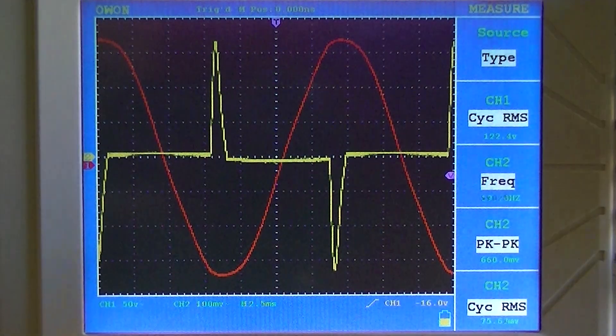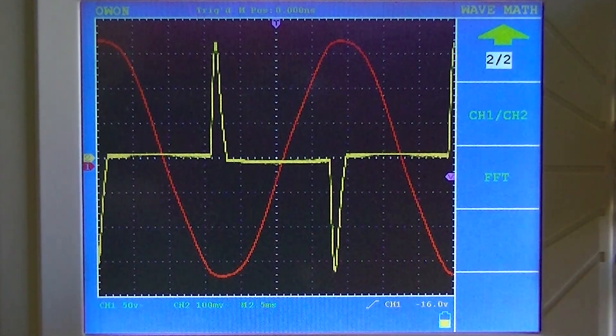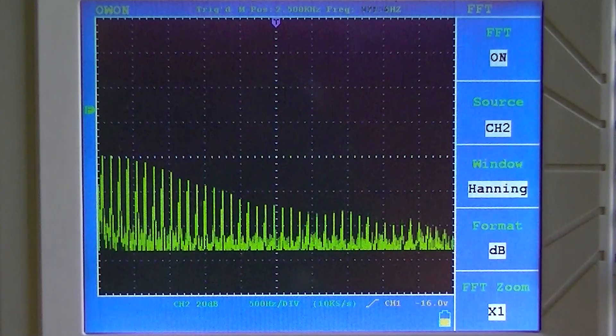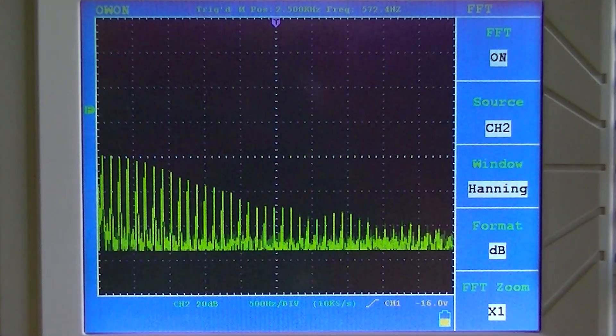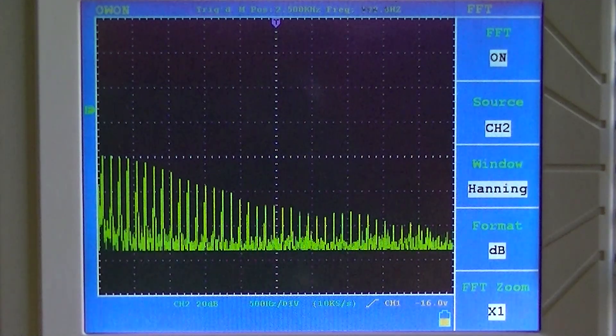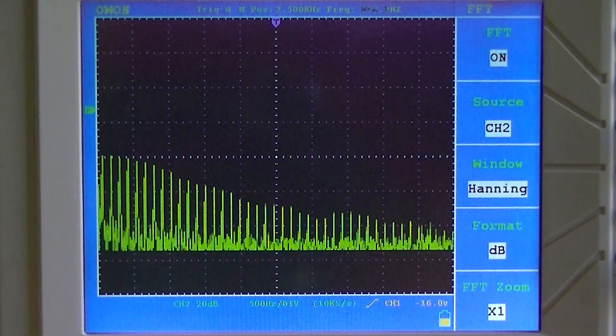And we're going to take a look at a function called the fast Fourier transform function. And this is what the harmonics look like. So we have 20 decibels per division in the vertical direction, and we're currently on 500 hertz per division in the horizontal direction.